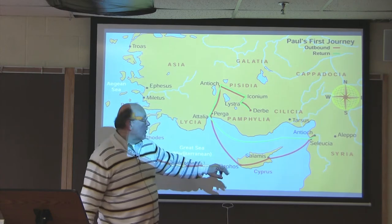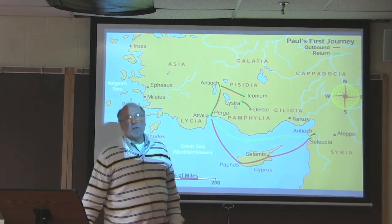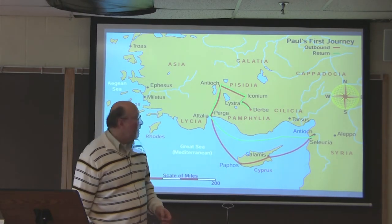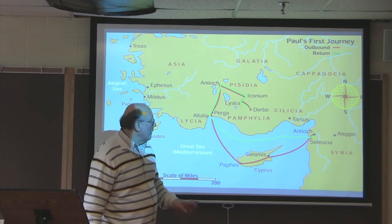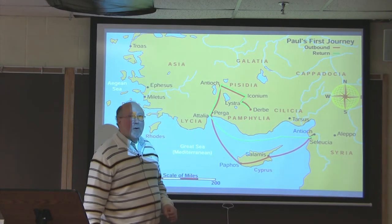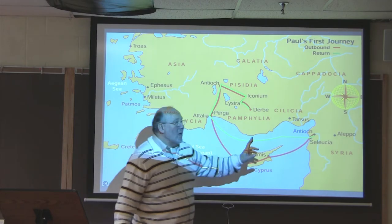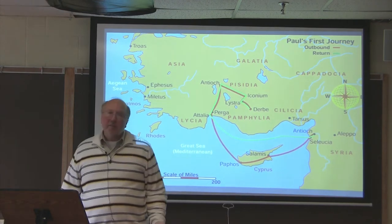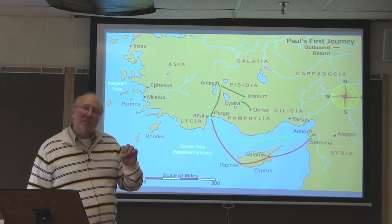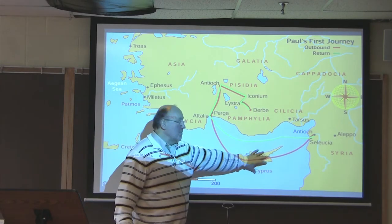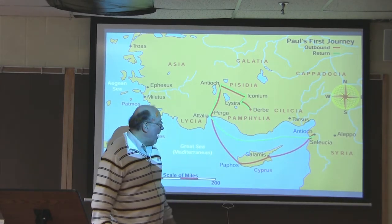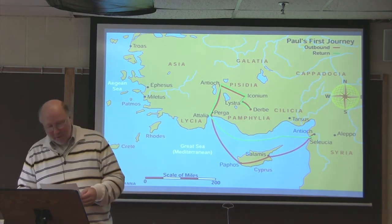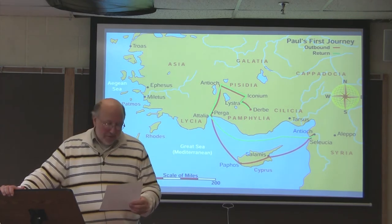Cyprus is the island off the coast of Syria and just below Turkey. From what Richard Cleave, who has lived all over the world, has said, Cyprus is one of the most beautiful places in the world. Why did they go from Antioch to Cyprus? That's Barnabas's hometown — that's where Barnabas was from. So Barnabas wanted to spread Christianity to his home territory. They go over to Salamis and Paphos. Basically, there's a guy named Bar-Jesus who is there.